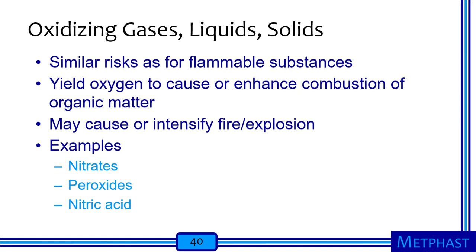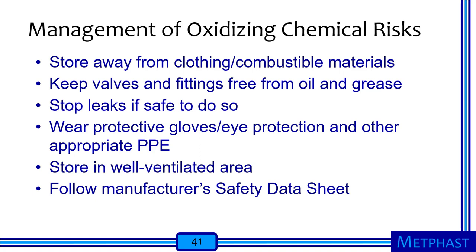Oxidizing gases, liquids, and solids present similar risks to flammable substances. These materials contribute or yield oxygen that can cause or enhance combustion of organic matter, causing or intensifying fires or explosions. Examples include nitrates, peroxides, and nitric acid. Management includes storing oxidizing chemicals away from combustible materials and even clothing, keeping valves and fittings free from oil and grease, stopping leaks when safe to do so, wearing protective gloves, eye protection, and appropriate PPE, storing materials in well-ventilated areas, and following the manufacturer's SDS.